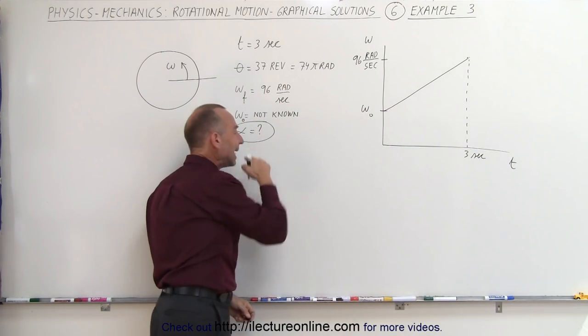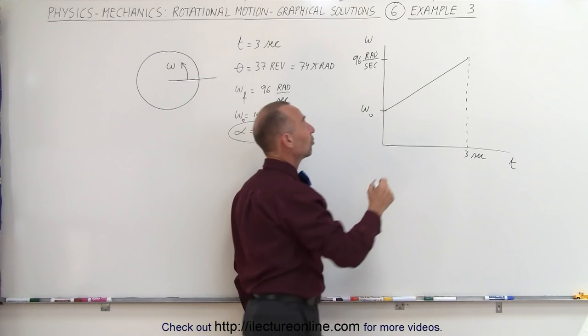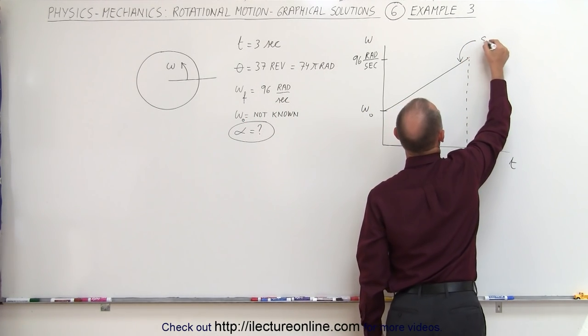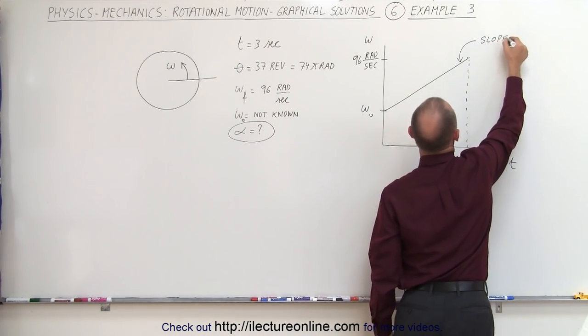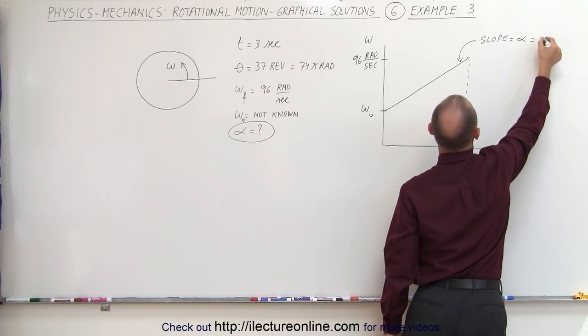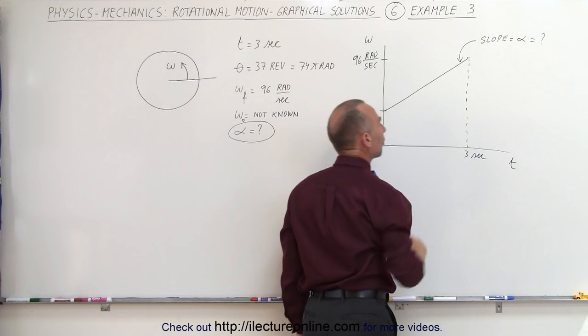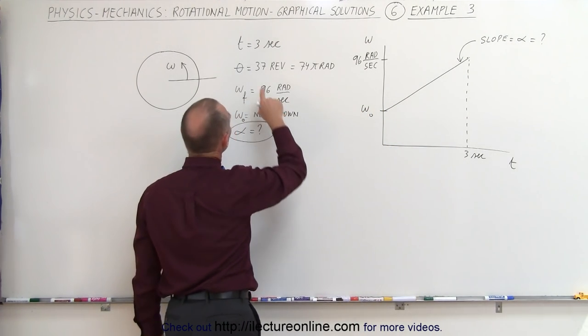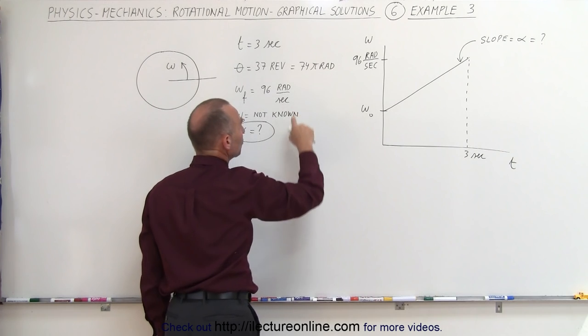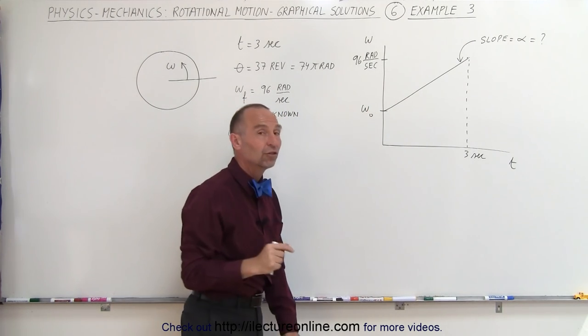Now we're supposed to find the angular acceleration which means we're supposed to find the slope of this line. Slope which is equal to angular acceleration, that's what we're looking for and of course we don't know what the slope is if we don't know what the initial omega is.